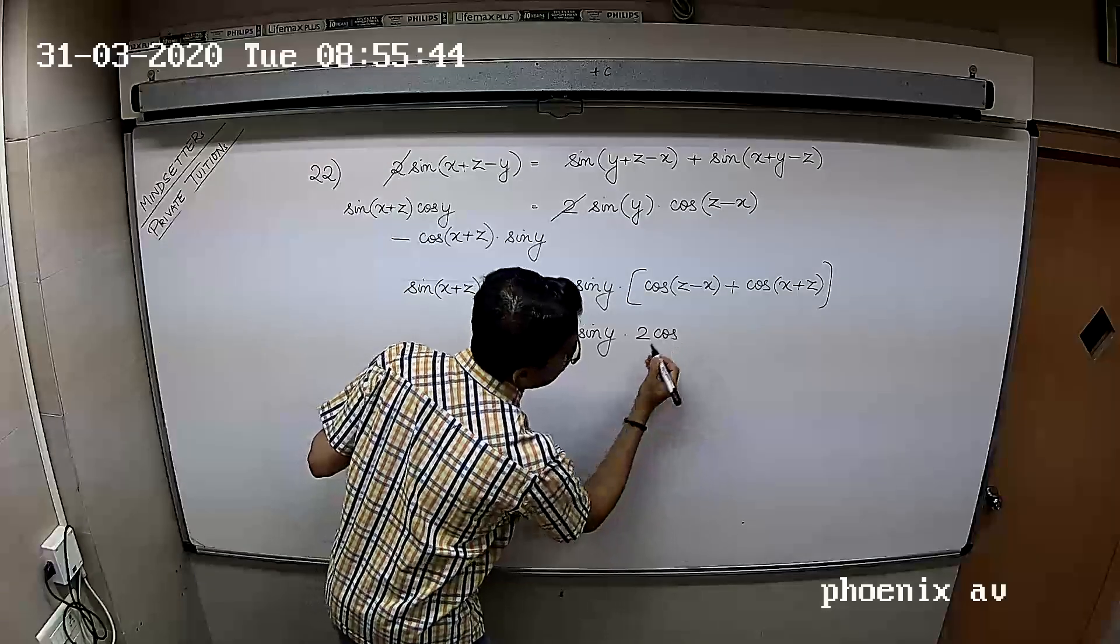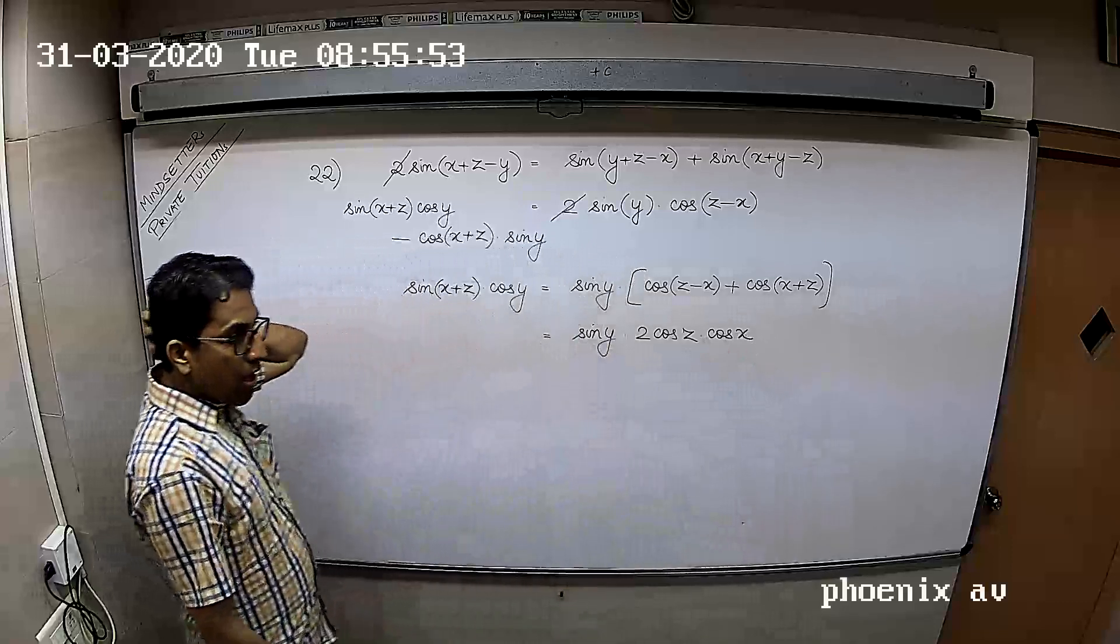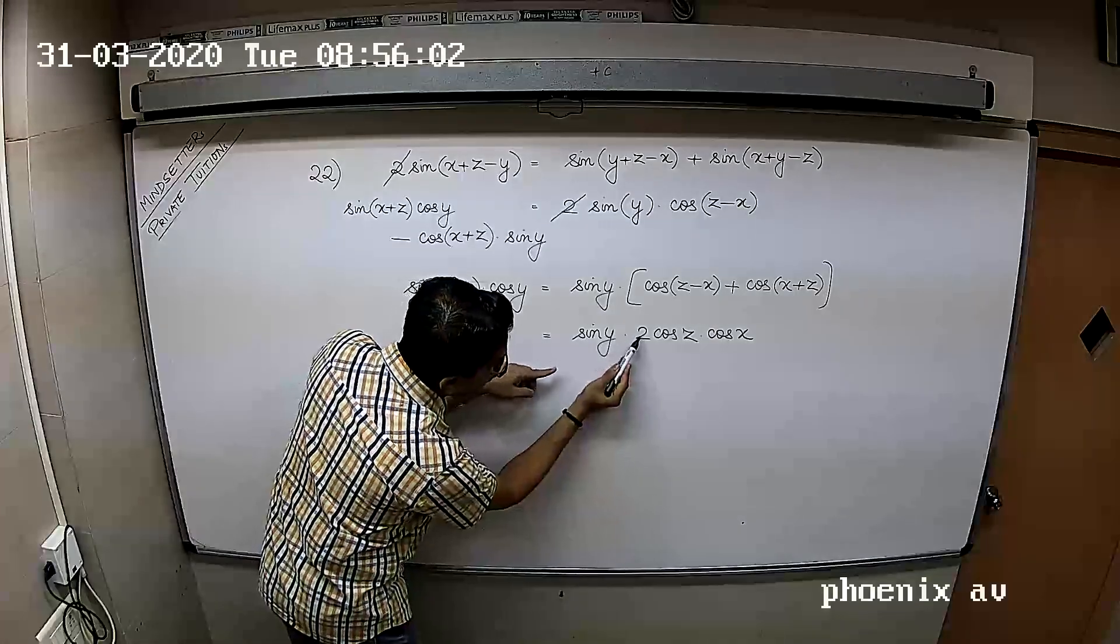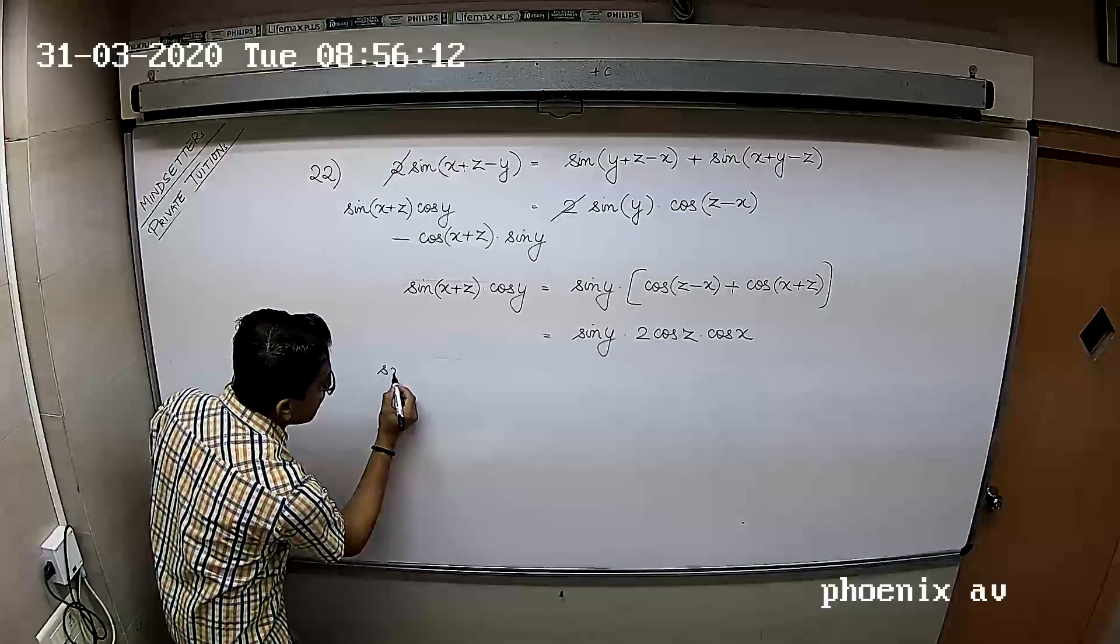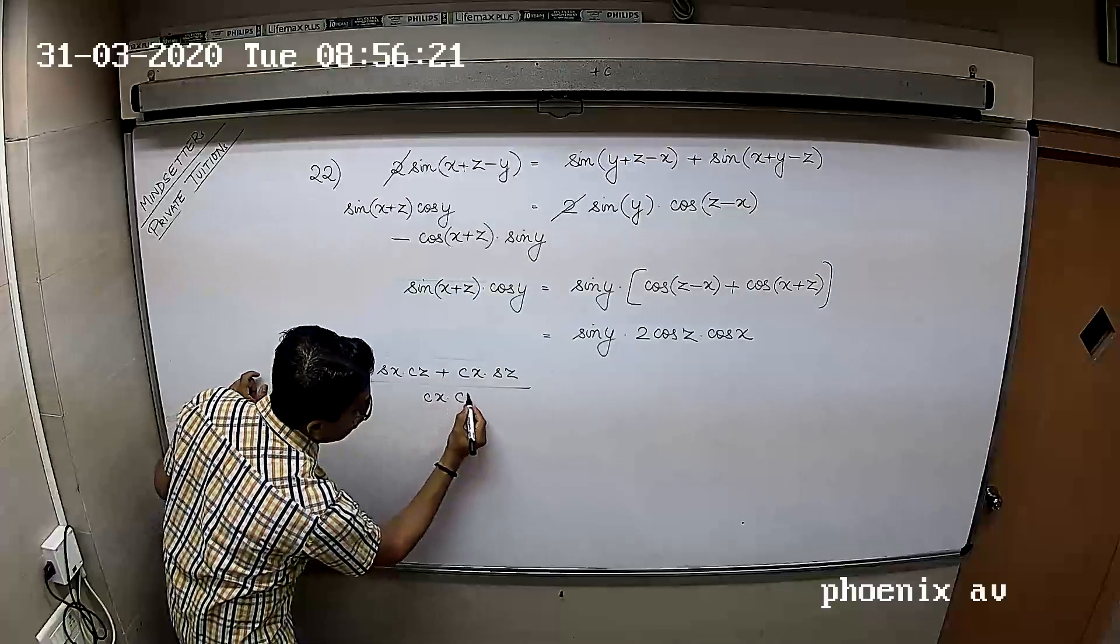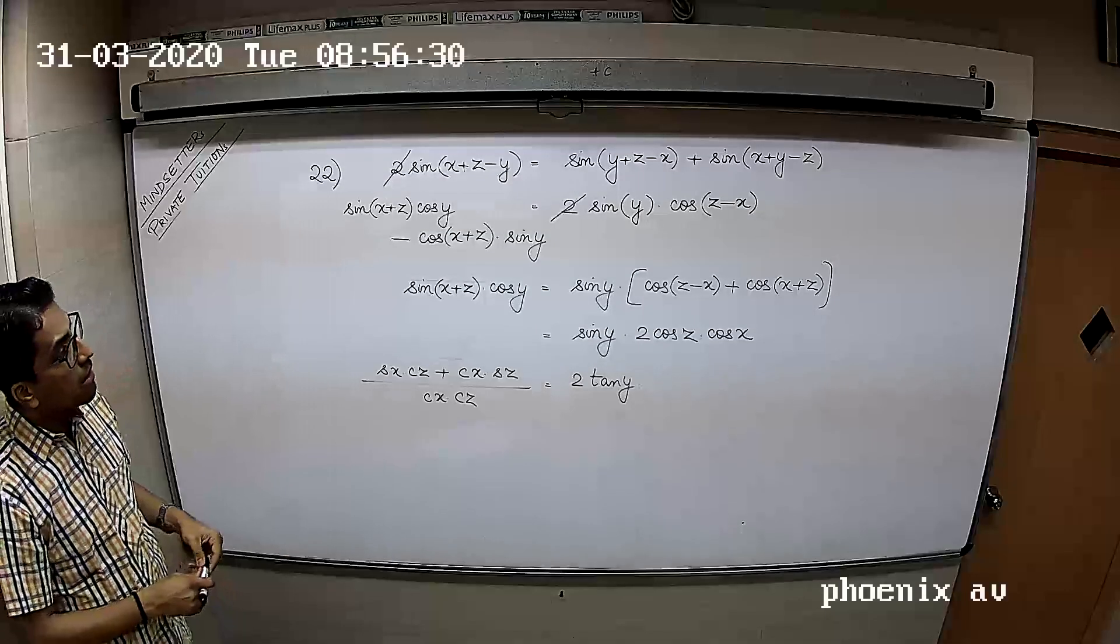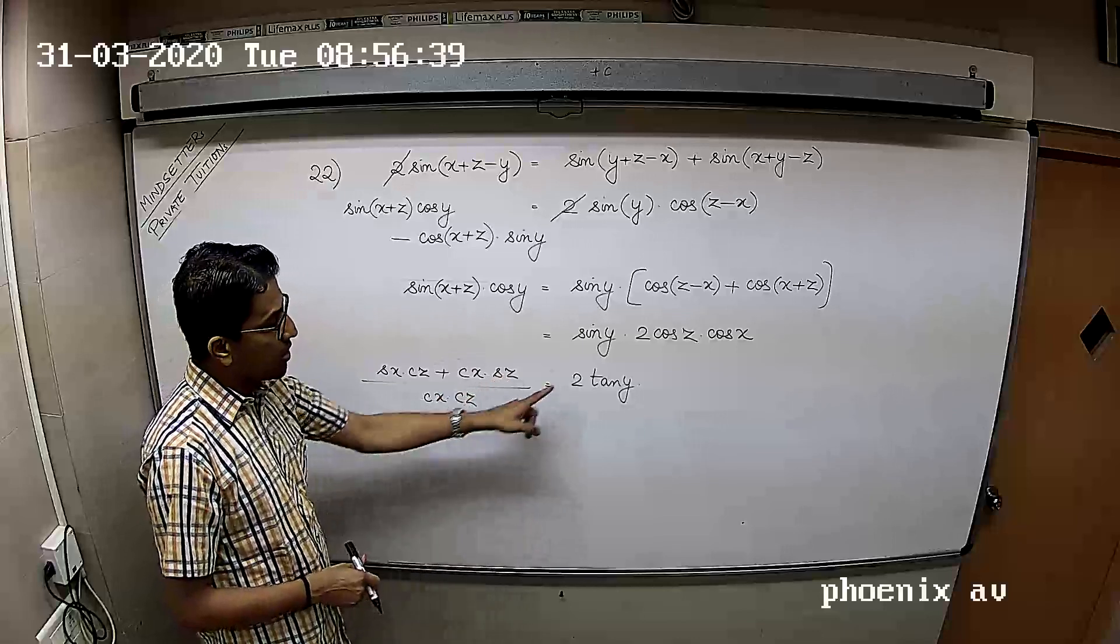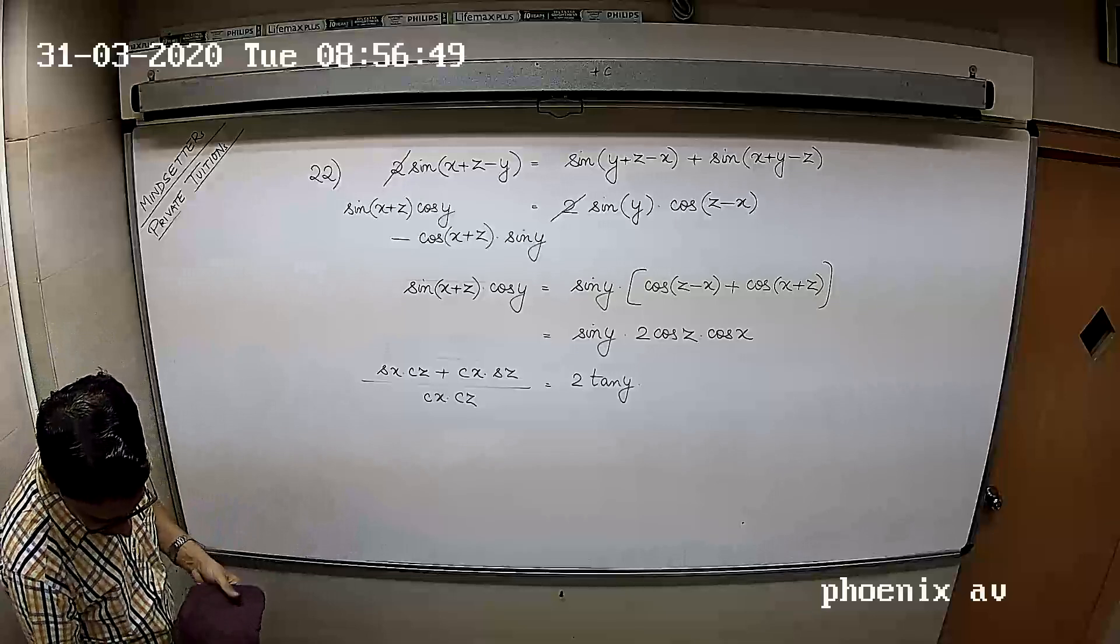This is going to be sin Y into 2 cos of X plus Z by 2. We are almost done. This cos will go below, so 2 tan Y minus. If you bring X and Z on this side, sin X cos Z plus cos X sin Z upon cos X cos Z equals 2 tan Y. Hence the 3 terms are in AP. But rather this should give us tan X plus tan Z equals 2 tan Y.